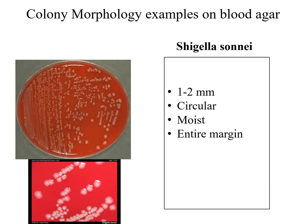Shigella sonnei colonies are 1 to 2 mm in diameter. The colony is circular and moist, with an entire margin.